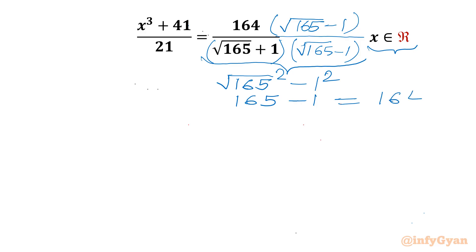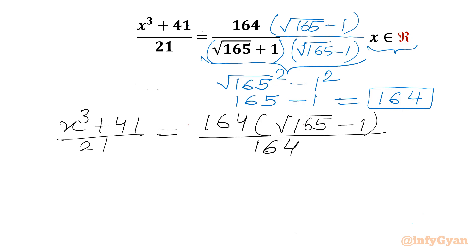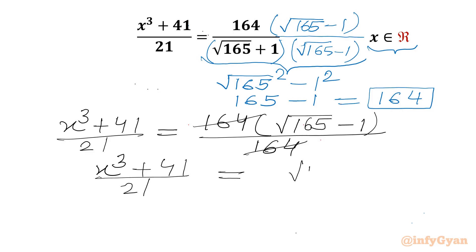So our denominator will be 164. Now I can write our equation with denominator 164: (x³ + 41)/21 = 164 × (√165 − 1)/164. We can cancel 164 from numerator and denominator, so x³ + 41/21 = √165 − 1.